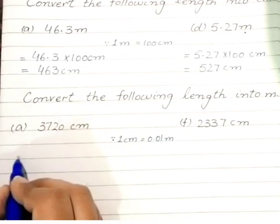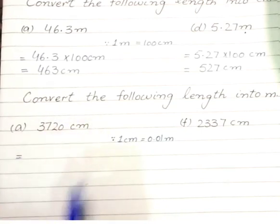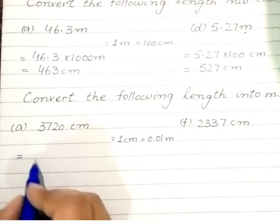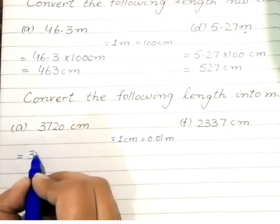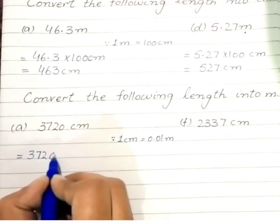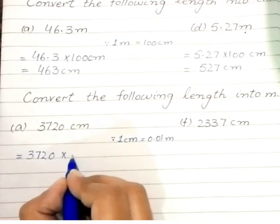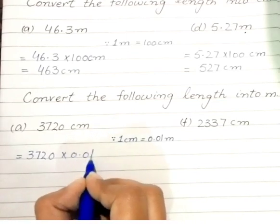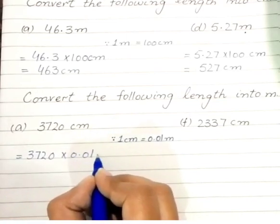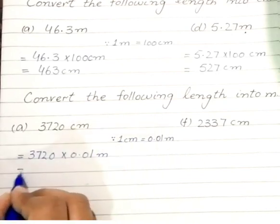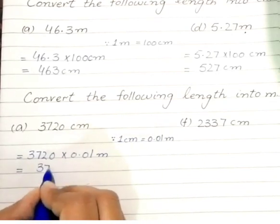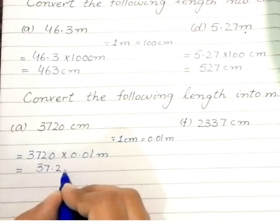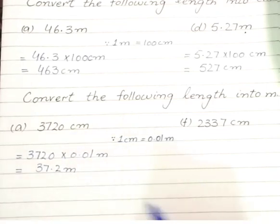The given length is multiplied with 0.01 meter. 3,720 is multiplied with 0.01 meter. So, the answer is 37.2 meters.